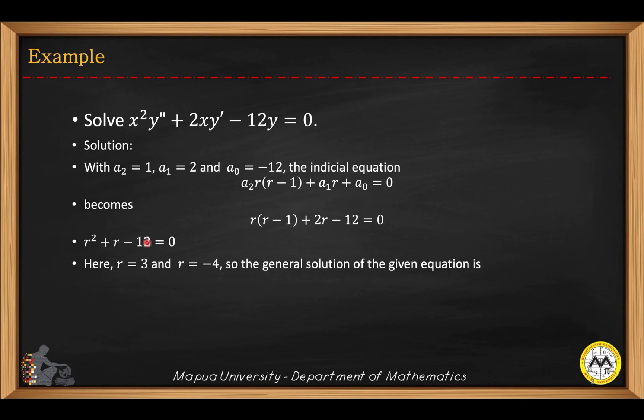Solving the quadratic equation will give you r equals 3 and r equals negative 4. We have distinct roots, so we follow the formula for a distinct root. Therefore, y is equal to c1 x raised to negative 4 plus c2 x cubed.